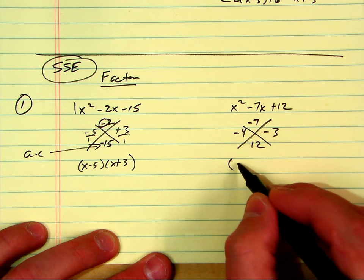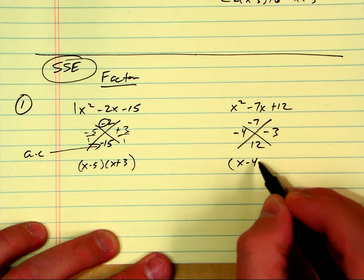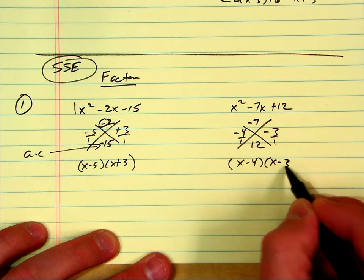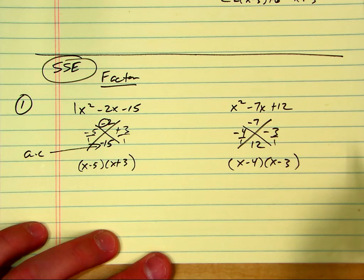So what are the binomials? x minus 4, x minus 3. Done deal. Any questions?